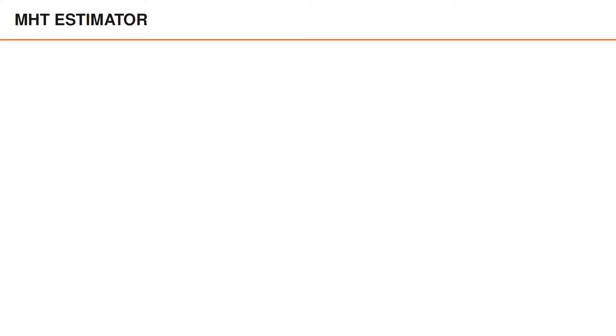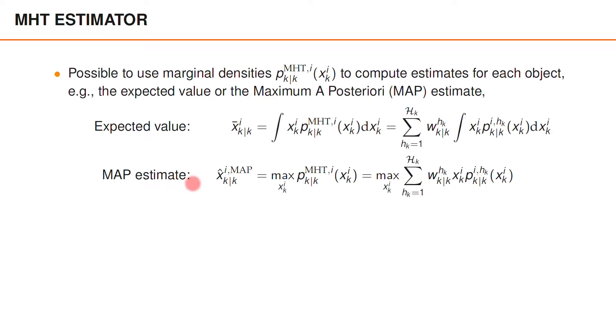In this video we will look at some MHT examples and compare the performance with GNN and JPDA. Just like in GNN and JPDA, we need to use an estimator in MHT. For both GNN and JPDA we use the marginal densities to compute the expected value for each object. In MHT it's possible to do the same — we can use the marginal densities to compute, for example, the expected value or the maximum a posteriori estimate, often called the MAP estimate. The MAP estimate is the one that maximizes the marginal density.